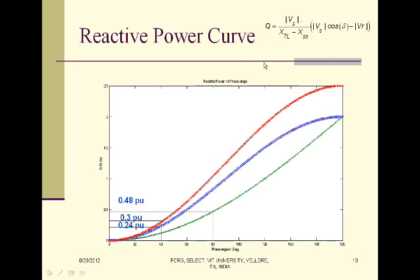For the reactive power curve with series compensation, the equation changes accordingly, and we can plot reactive power versus phase angle for all three cases. The blue color represents without compensation, the green color represents with shunt compensation, and the red color shows with series compensation. For the same 40-degree phase angle, without compensation we have 0.24 per unit reactive power, with shunt compensation it is 0.48 per unit, but by implementing series compensation in the same network, we can only achieve 0.3 per unit. That is lesser than the shunt compensation value.